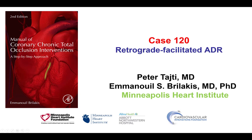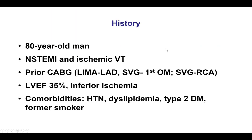Hi, this is Peter Taiti and Manos Brilakis from the Minneapolis Heart Institute and the Cardiovascular Innovations Foundation, presenting case 120 for the Manual of CTO Interventions. This is a case of antegrade dissection re-entry facilitated by the retrograde approach. The patient was an elderly man who presented with a non-ST elevation myocardial infarction and ischemic ventricular tachycardia. He had previous coronary bypass and on stress testing had an EF of 35% as well as inferior ischemia.